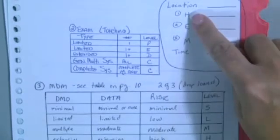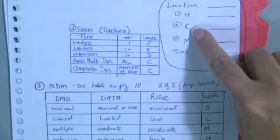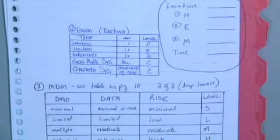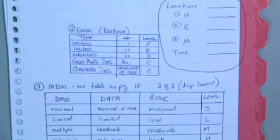H is history. E is exam. M is medical decision making. So on the board exam, your job is trying to pull out that information from the note. What is the level of history? What is the level of exam? What is the level of medical decision making?